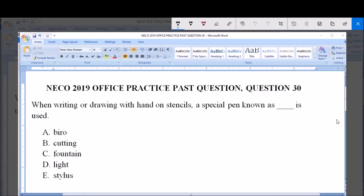When writing or drawing with hand on stencils, a special pen known as dash is used. A. Biro, B. Cutting, C. Fountain, D. Light, and E. Stylus.